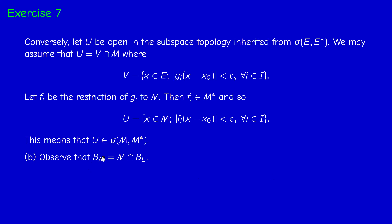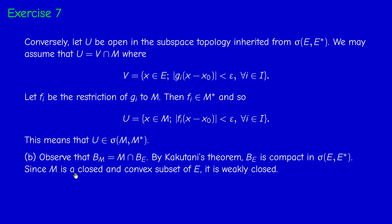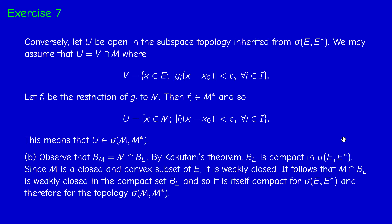The unit ball B_M is just the intersection of M with the unit ball of E. Since E is reflexive, Kakutani's theorem tells us B is compact in the weak topology of E. But since M is closed and convex, it is weakly closed by exercise 1. Therefore, B_M is a closed set in a compact space, and therefore it's compact. Applying Kakutani's theorem again tells us M is reflexive.